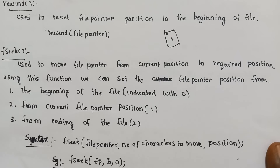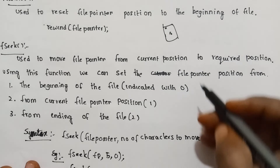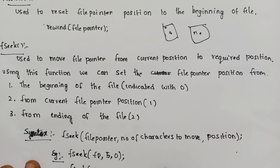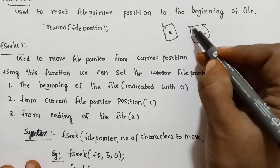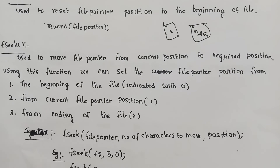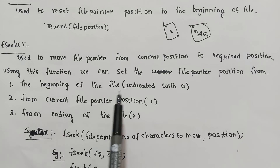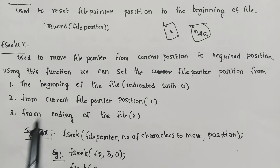The next function is fseek. Fseek is used to move the file pointer from the current position to the required position. The file pointer is at some nth position, and we can move it to a new position — such as from the beginning of the file, the current file pointer position, or the ending of the file.